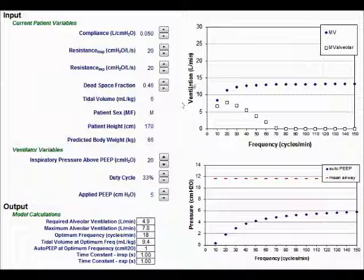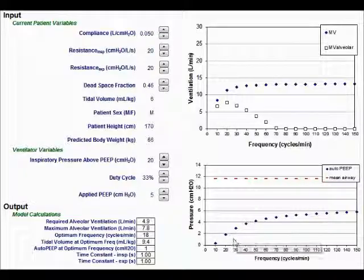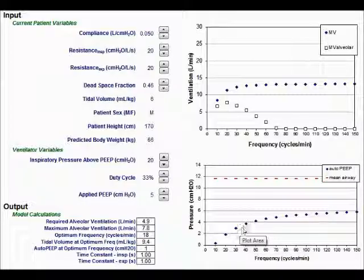Now we look at the output variables and we look at our graphs here. As we notice, if we're going down to our mean airway pressure and our auto PEEP, the auto PEEP is these blue diamonds, that as you start to increase the frequency above 25, we start to generate auto PEEP.